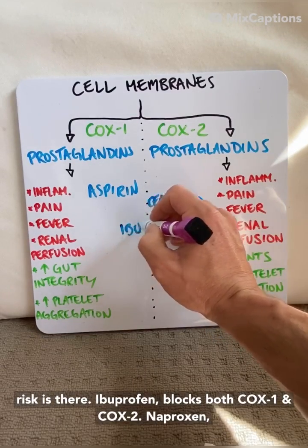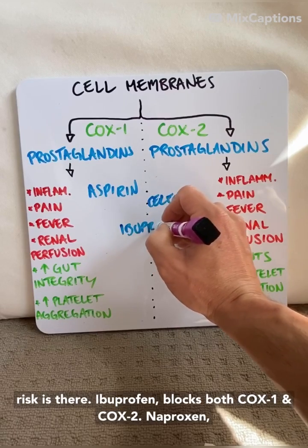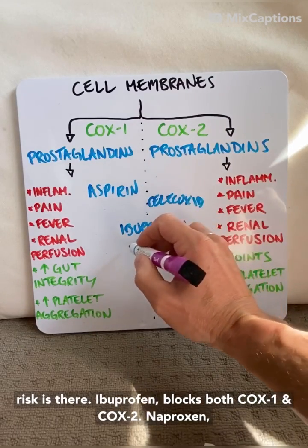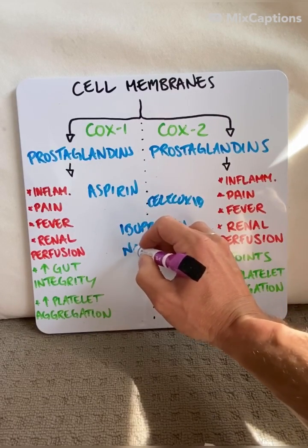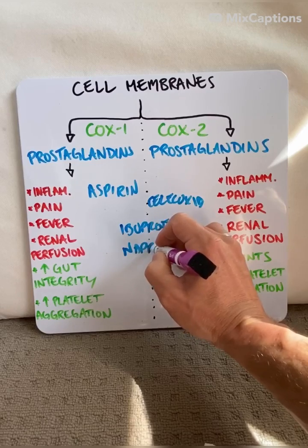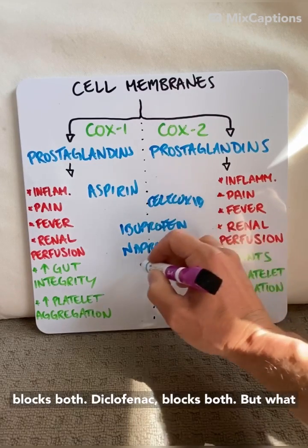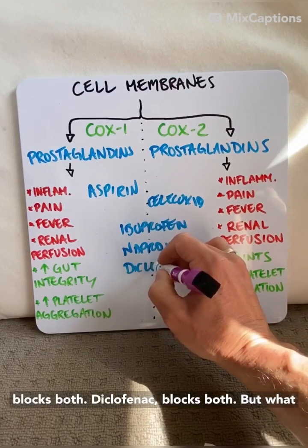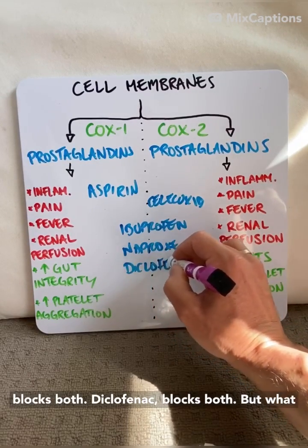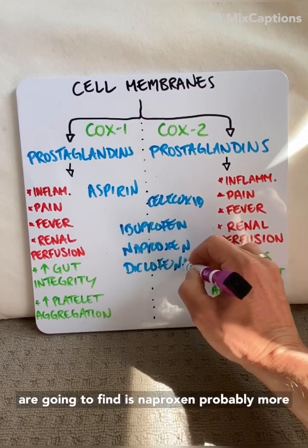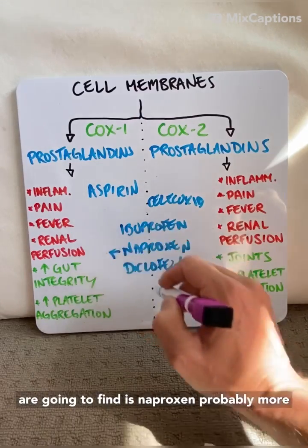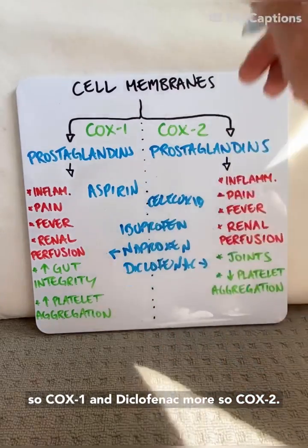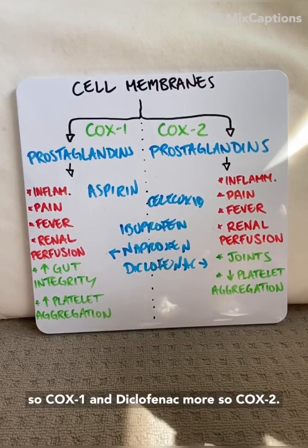Ibuprofen blocks both. Naproxen blocks both. Diclofenac blocks both, but what you're going to find is naproxen probably more so COX-1, and diclofenac more so COX-2.